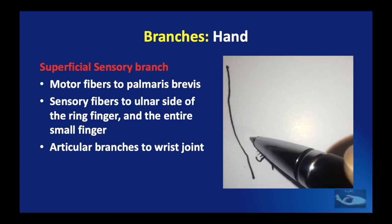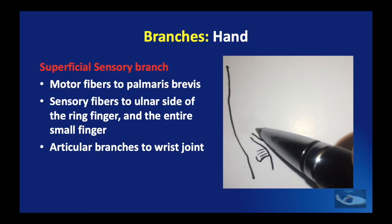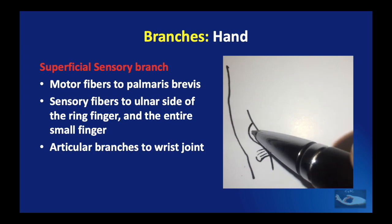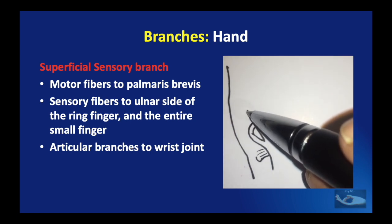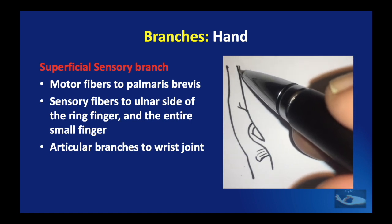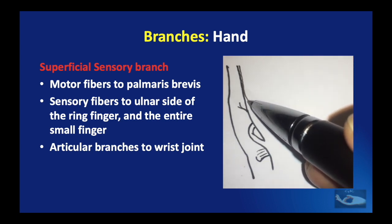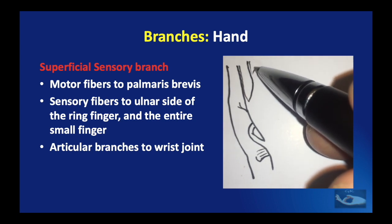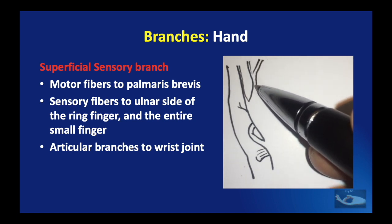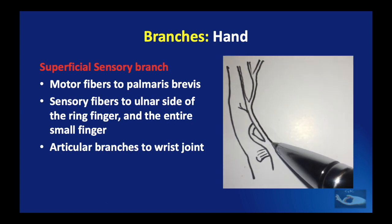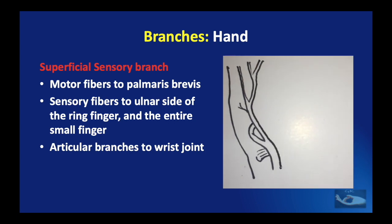The superficial sensory branch first gives off a motor branch to palmaris brevis, then divides into two terminal branches supplying the ulnar side of the little finger and the contiguous sides of the ring and little fingers. It also supplies articular branches to the wrist joint.